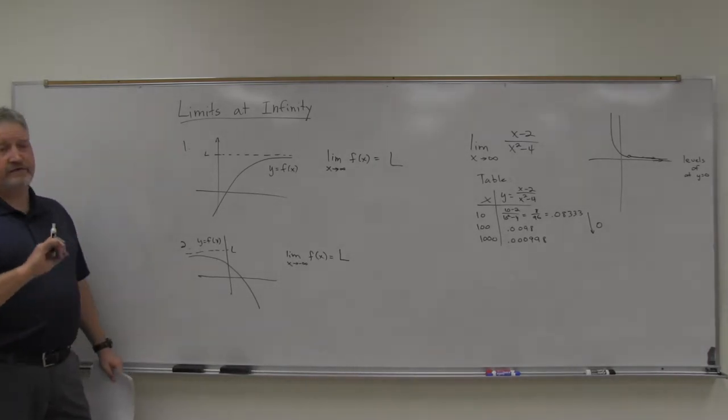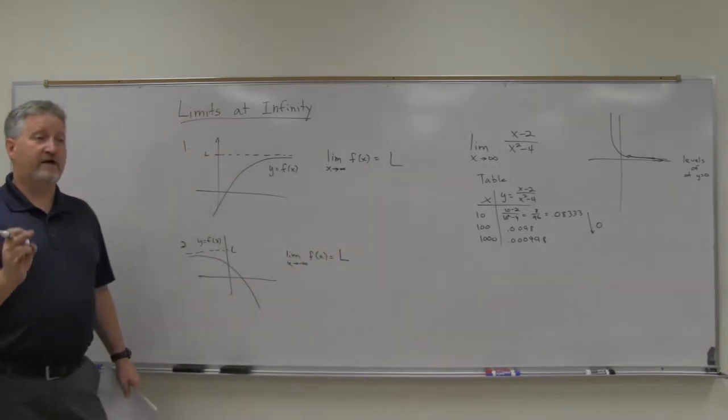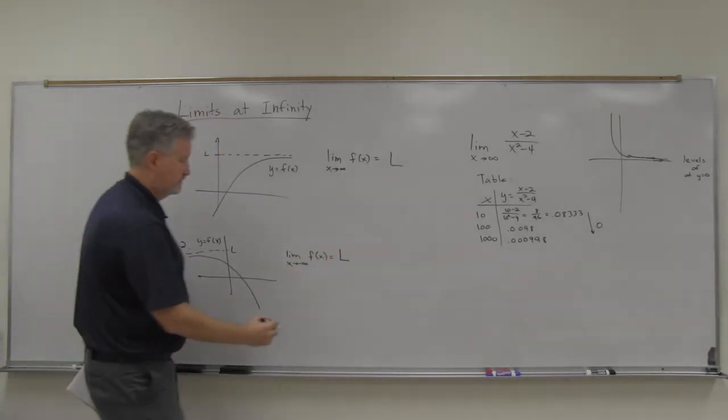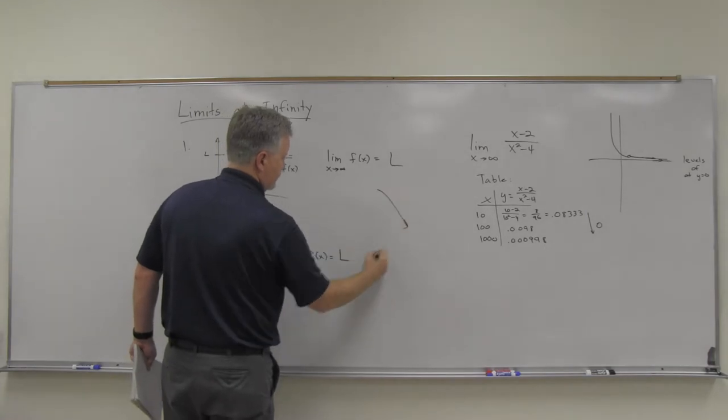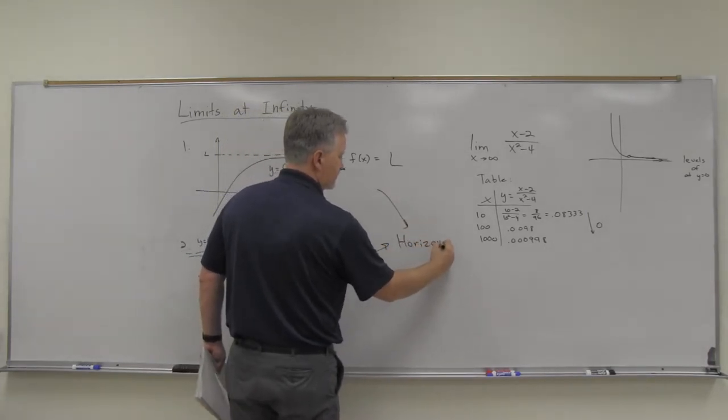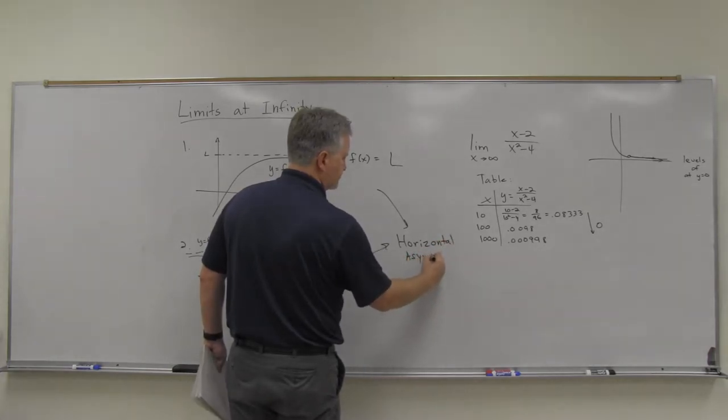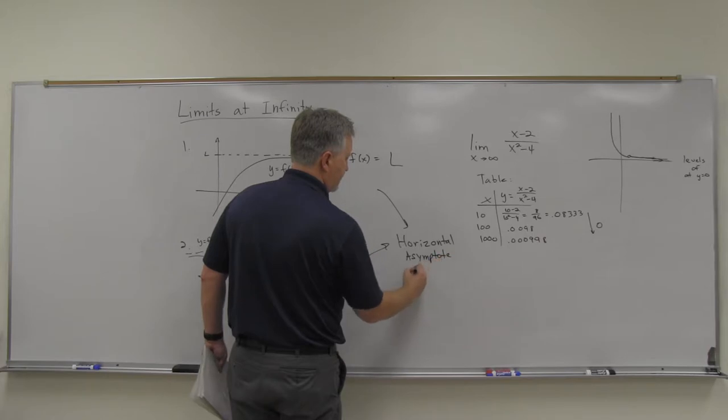Now, another way to phrase this is what we also have when we have these limits are L at positive or negative infinity. We also have what's known as a horizontal asymptote in both cases here. We've got a horizontal asymptote of y equals L.